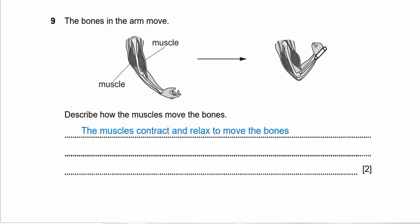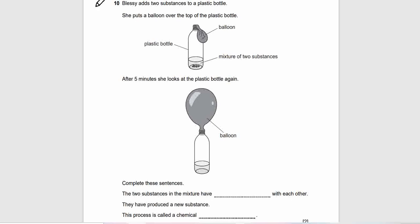Question 10: Leslie adds two substances to a plastic bottle. She puts a balloon over the top of the plastic bottle. After five minutes she looks at the plastic bottle again. The balloon is inflating. Complete these sentences: The two substances in mixture have something with each other. They produce a new substance. The process is called a chemical blank. Get your answer ready guys. Let's reveal the answer: they have reacted with each other and the process is called a chemical reaction.